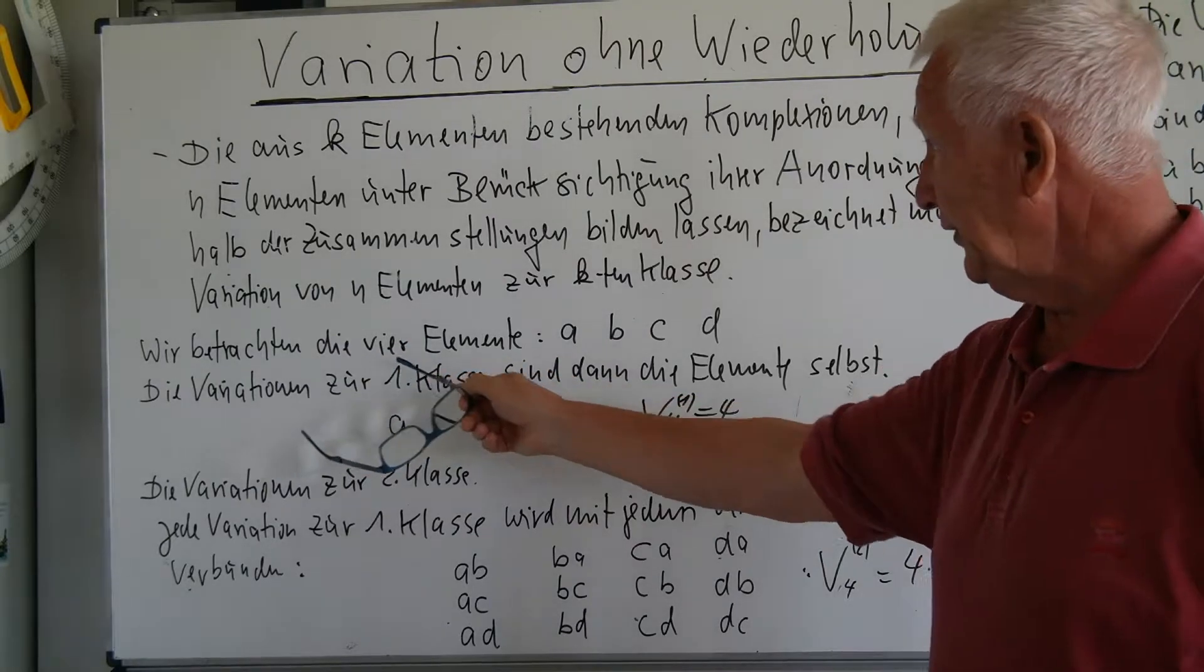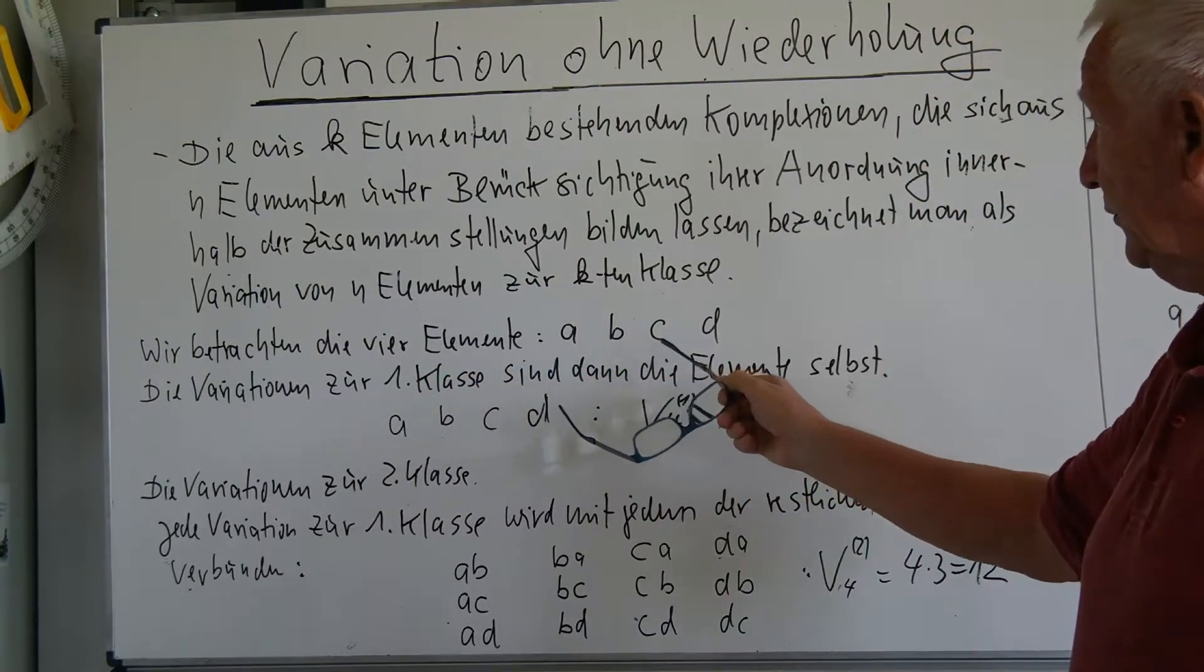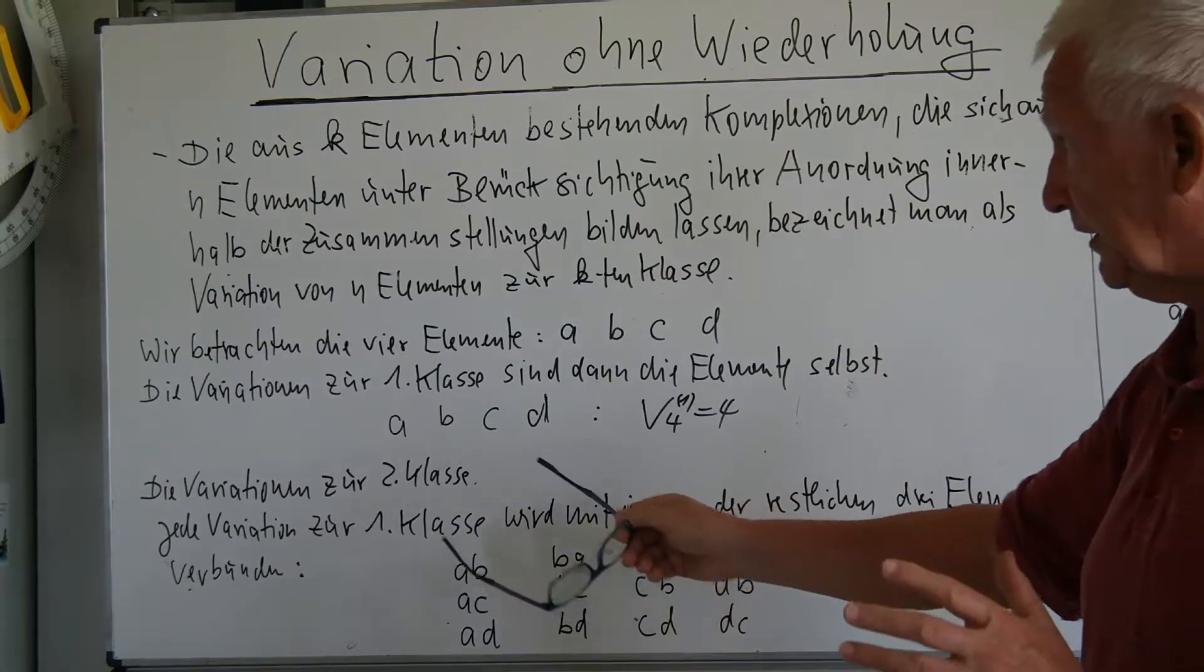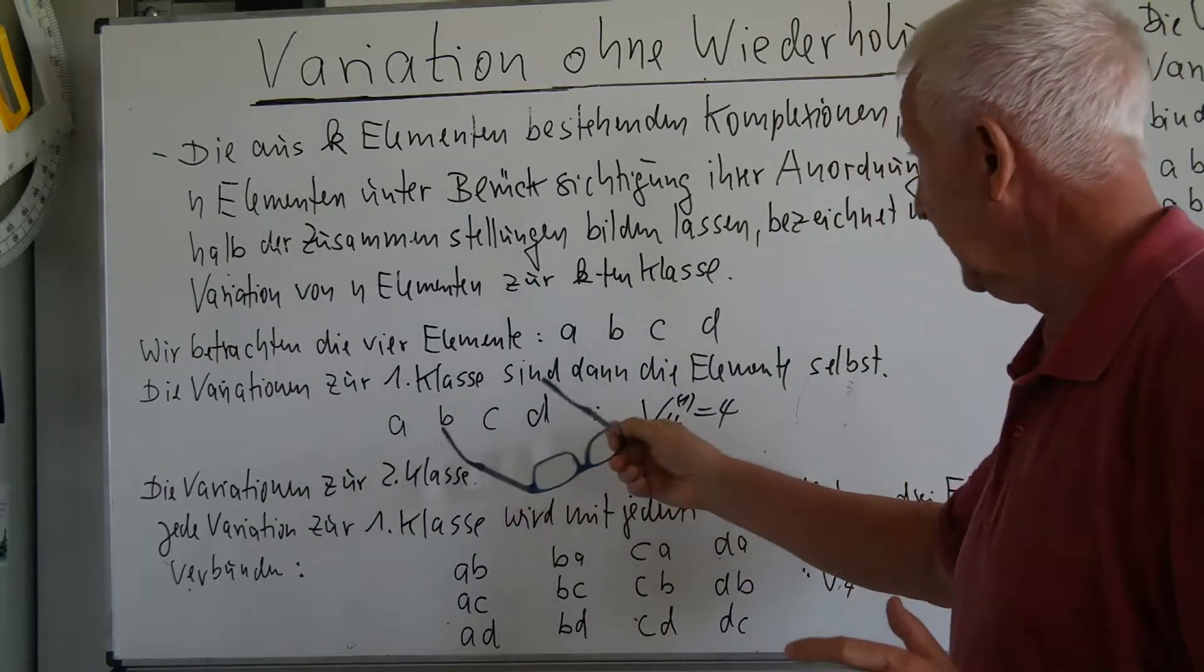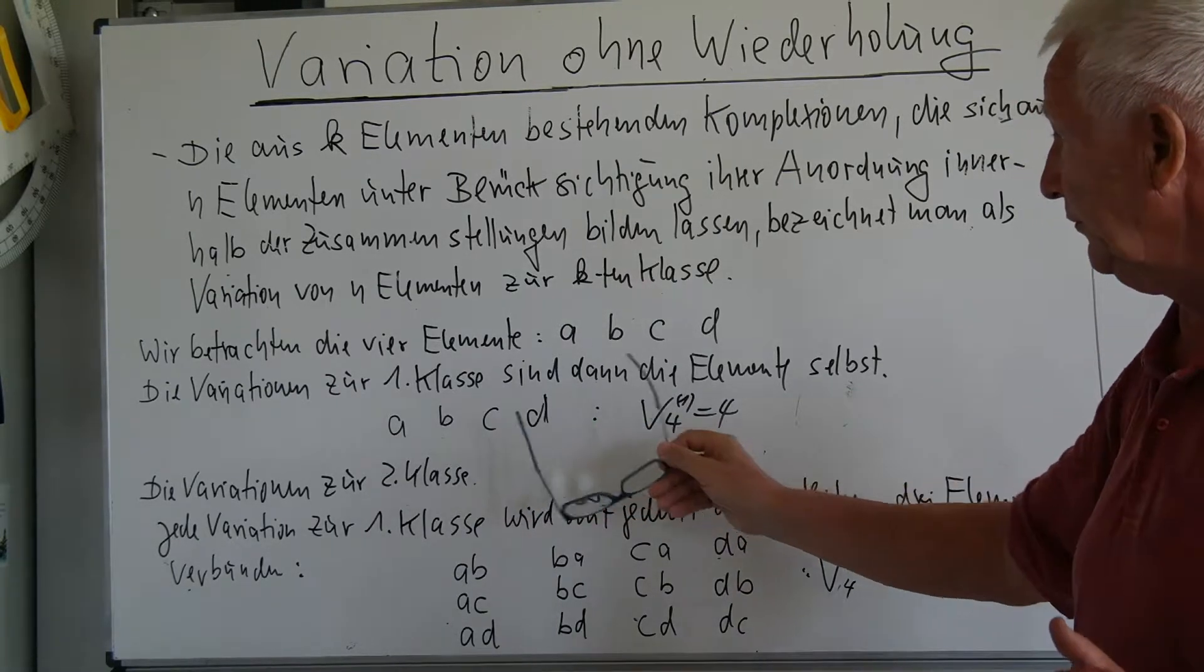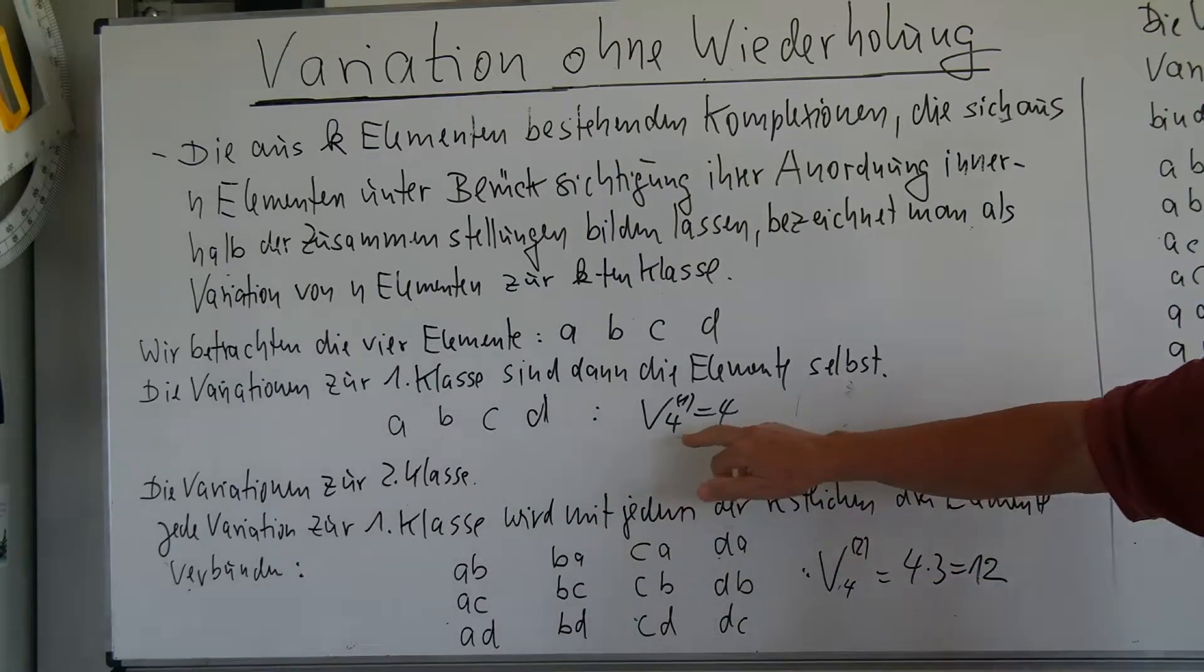If we look at the four elements A, B, C and D, then the variations in the first class are just from the elements themselves: A, B, C, D. And then write that so,